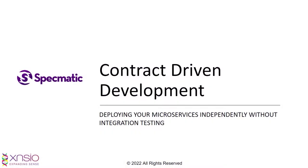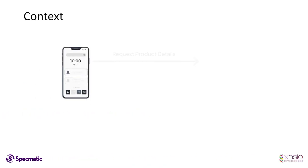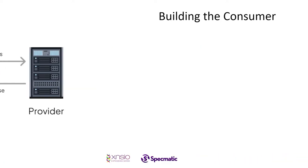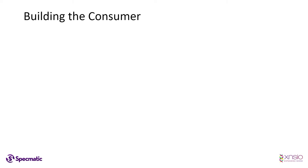Specmatic enables teams to practice contract-driven development by leveraging API specifications as executable contracts. Let's assume we're building a mobile application that requests product details from a service and then displays the same. The application requesting the data is the consumer and the service responding with the data, let's call it the provider. With the terminology out of the way, let's look at how we would go about building the consumer application.